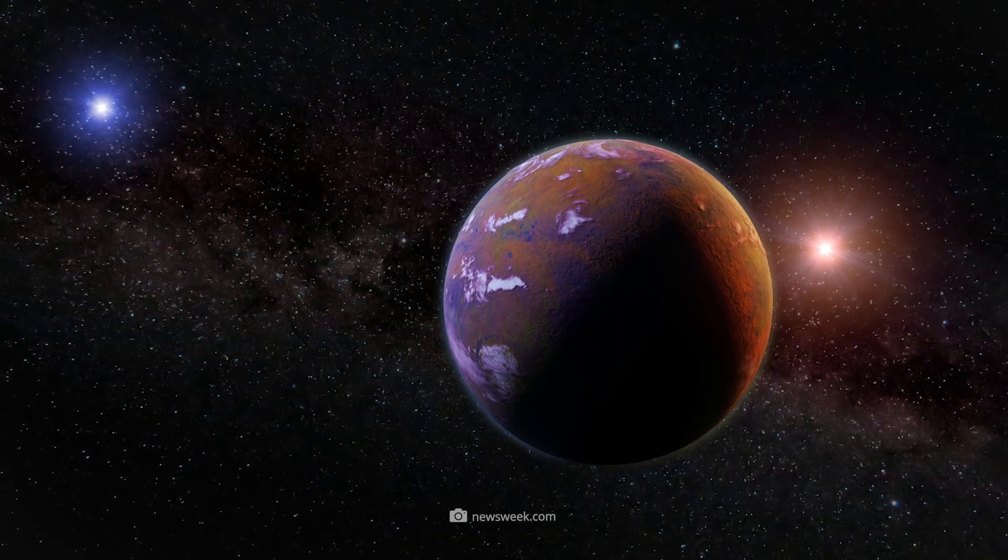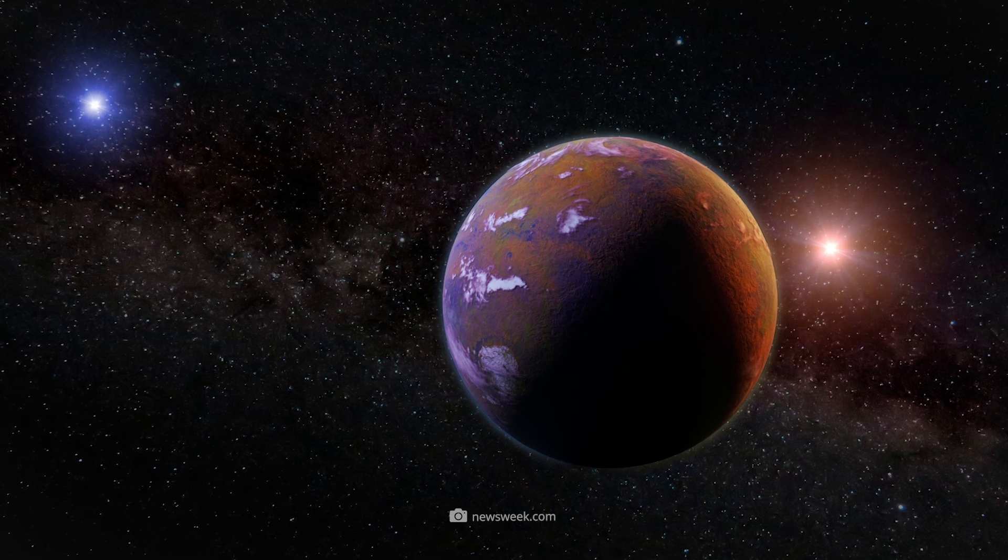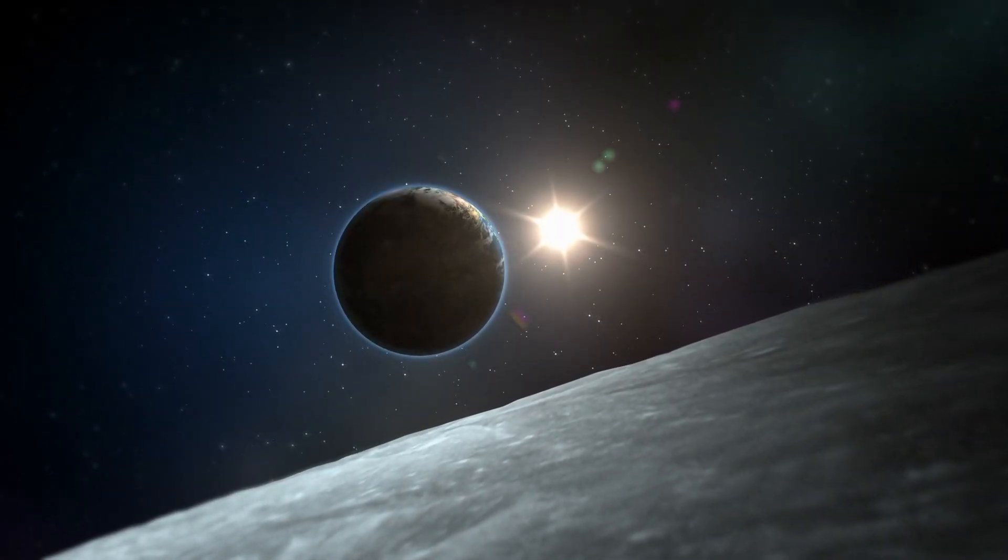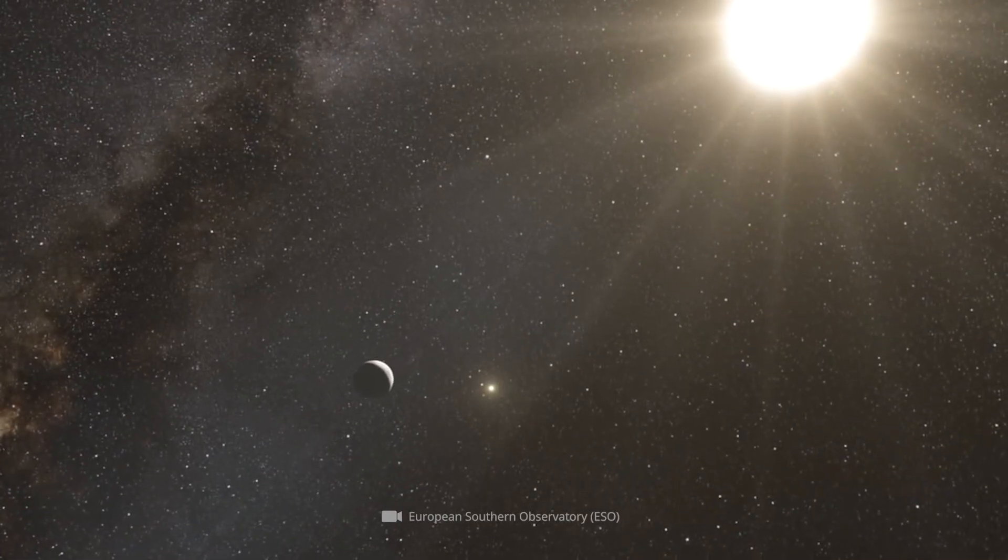At this point, however, we would like to focus our attention on the exoplanet that was first detected in the vicinity of the nearest star to the Sun, Proxima Centauri b.